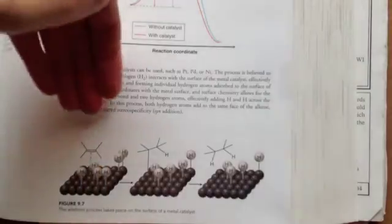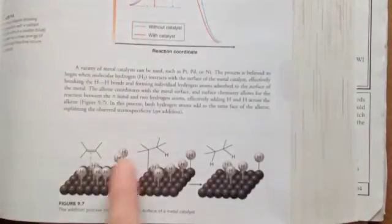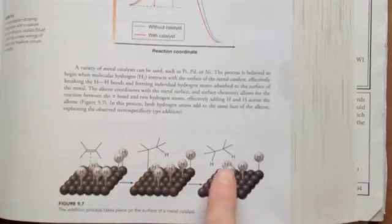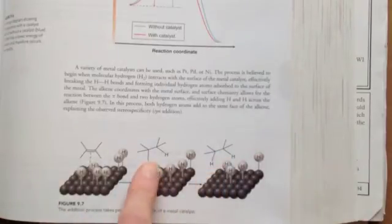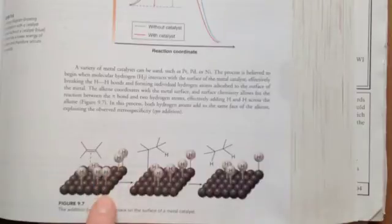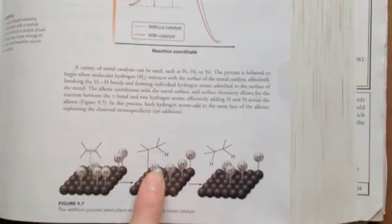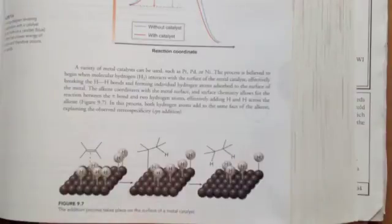And when it lands down on the surface of the metal, it will pick up the hydrogen atoms, do the addition reaction, and then fly off as an alkene. Because of the way the metal catalyst holds the hydrogen atoms in place, they're always going to be guaranteed to attach to the same side of the molecule.